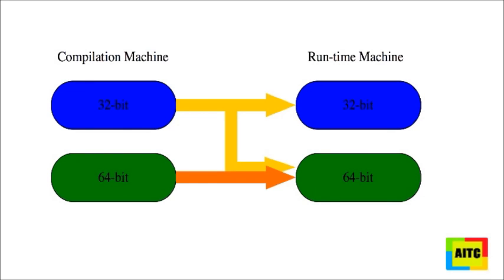The terms 32-bit and 64-bit refer to the way a computer's processor, also called a CPU, handles information. The 64-bit version of Windows handles large amounts of random access memory (RAM) more effectively than a 32-bit system. To install a 64-bit version of Windows 7, you need a CPU that's capable of running a 64-bit version of Windows.